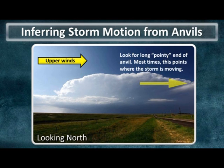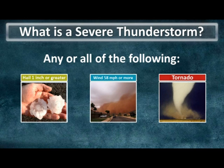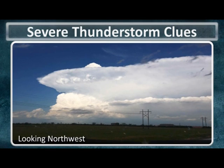The only drawback to this rule of inferring storm motion from the anvil is that rotating storms, otherwise known as supercells, will oftentimes have motions that deviate from the winds aloft. Before we move into recognizing clues of severe thunderstorms, we need to first know exactly what a severe thunderstorm is. A severe thunderstorm is classified as having any or all of the following: hail of at least one inch in diameter or larger, winds of 58 miles per hour or greater, or a tornado.